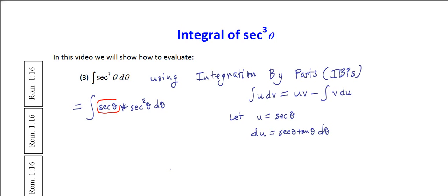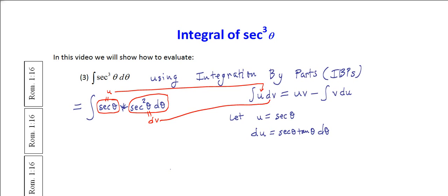We make the first part — secant theta — be u, and the balance of the terms will be dv, which is secant squared of theta d theta. That's very convenient because in the last video we showed that the integral of secant squared of theta d theta is tangent of theta. So v is simply tan theta.